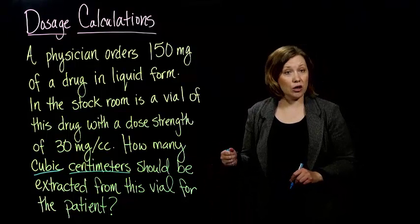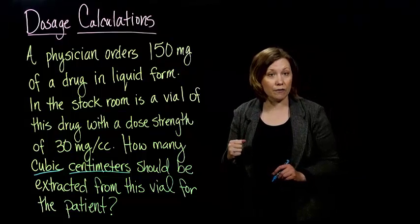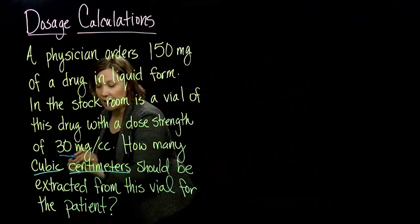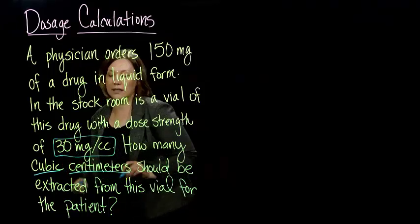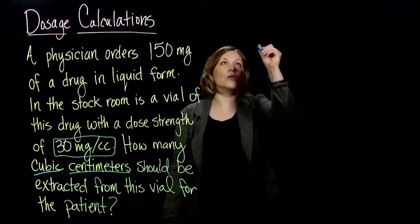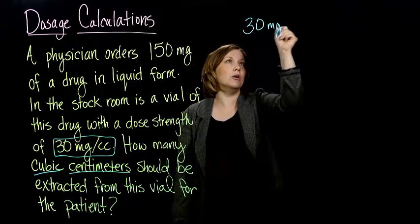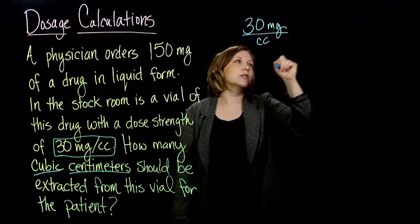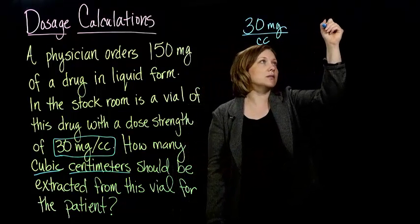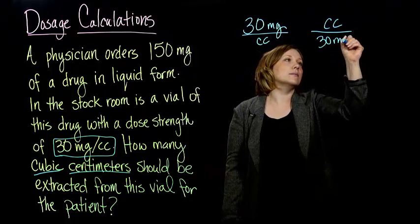The first thing I'm going to do is look for the dose strength. That's going to be my conversion factor. What's in the medicine I have on hand? I can see that's 30 milligrams per cc, so that's going to be my conversion factor, or what I'm going to multiply by to convert, which I could write the milligrams on top or I can write the milligrams on bottom.